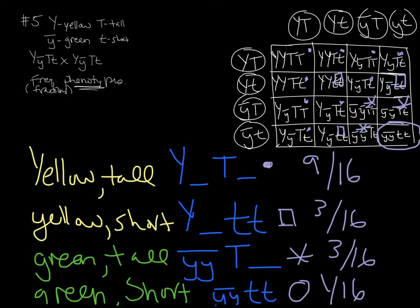So the frequencies of the different phenotypes are: 9/16 yellow tall plants, 3/16 yellow short, 3/16 green tall, and 1/16 green and short plants. If asked for a phenotypic ratio, that's when you write 9 yellow tall : 3 yellow short : 3 green tall : 1 green short. In this case we want the fractions.